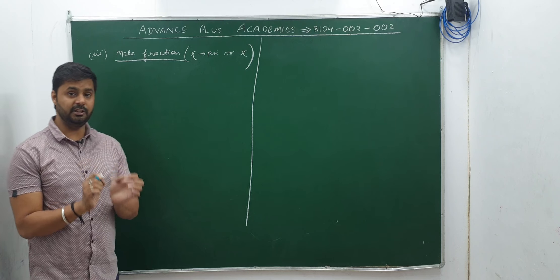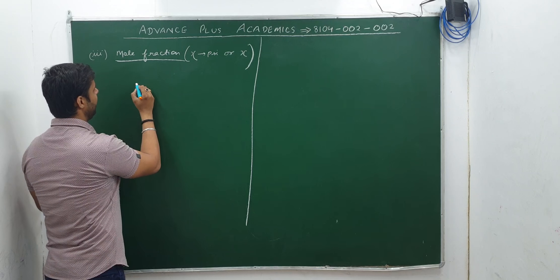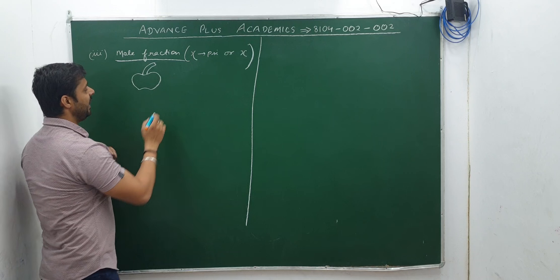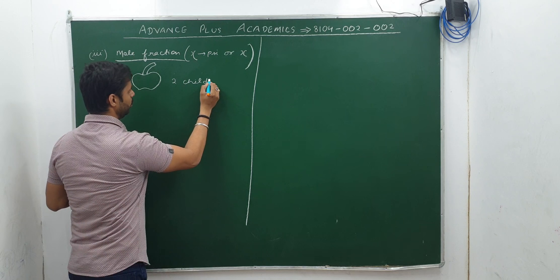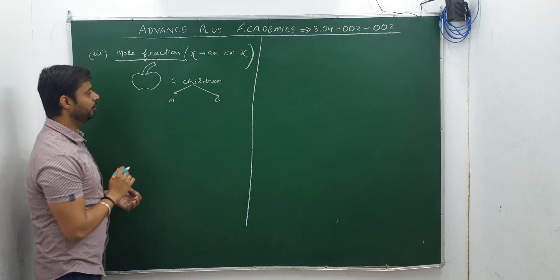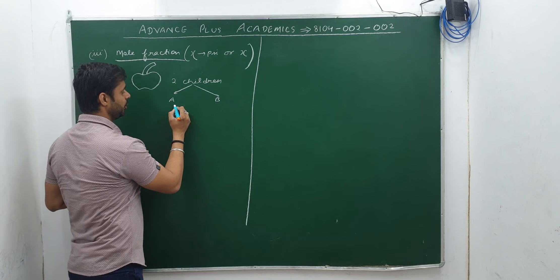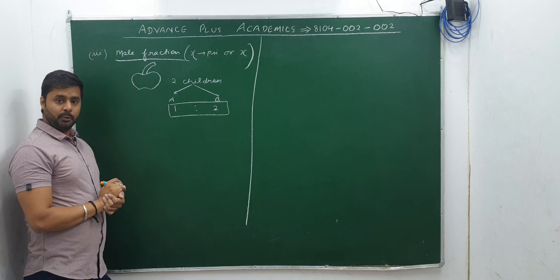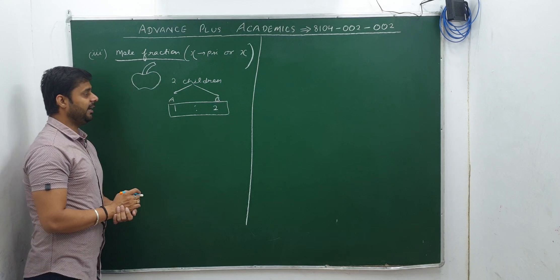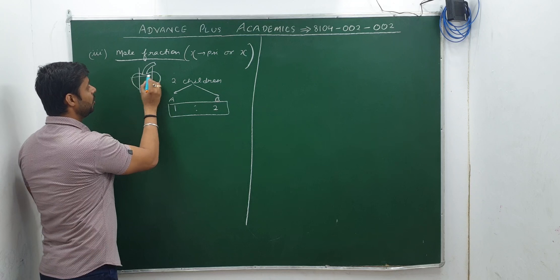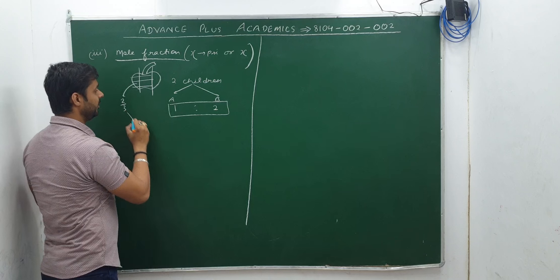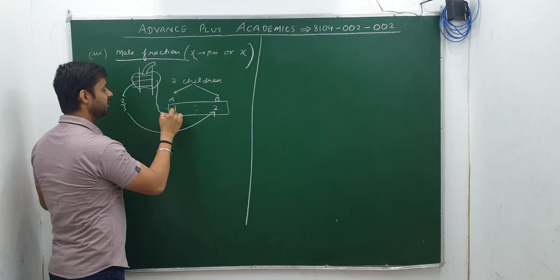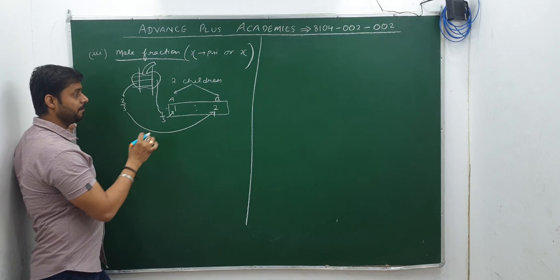In order to understand mole fraction, we must know the difference between ratio and fraction. Let's take an example. Suppose I have an apple and two children — one is A and another is B — and we have to divide this apple in a ratio of 1:2. Then the total parts are three, out of which two parts of three will be given to child B while one part out of three will be given to child A. So you just converted ratio into fraction.